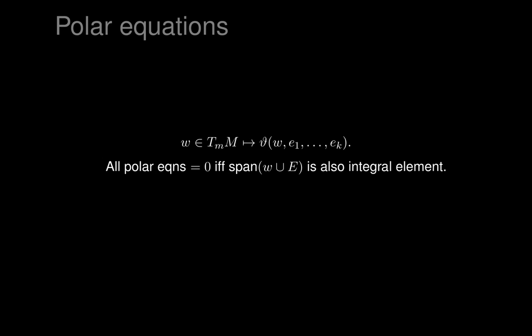If all the polar equations vanish on a particular w, then taking w together with any choices of little e's from capital E and plugging them in makes theta vanish. Polar equations all vanish precisely when you can add w to E, and the span of w together with E is also an integral element. If w is not already in E, that gives us a larger integral element. This shows that constructing successively larger integral elements is a linear algebra problem.